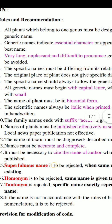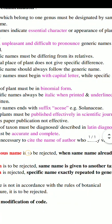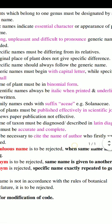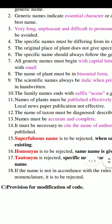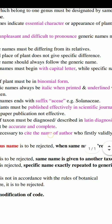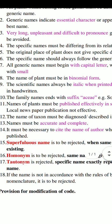Rule 7: All generic names must begin with a capital letter, while the specific name begins with small letters. This is a binomial nomenclature system rule. Most importantly, whenever you write any botanical name of any plant, the generic name starts with a capital letter and the specific epithet with small letters.